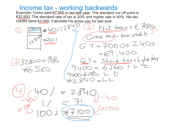We are nearly there. The final step to answer this question: gross income is made up of €32,800 plus the amount earned above the standard cut-off point, which was €7,100. When we add those two together, we get a gross income of €39,900.